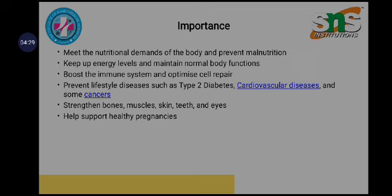A balanced diet builds the immune system and can help prevent type 2 diabetes and heart disease. It also strengthens bones, muscles, skin, teeth, and eyes through intake of all seven essential components — carbohydrates, proteins, vitamins, fats, fiber, and water. It supports overall health and is also important in the growth and development of the fetus, brain function, and nervous function.